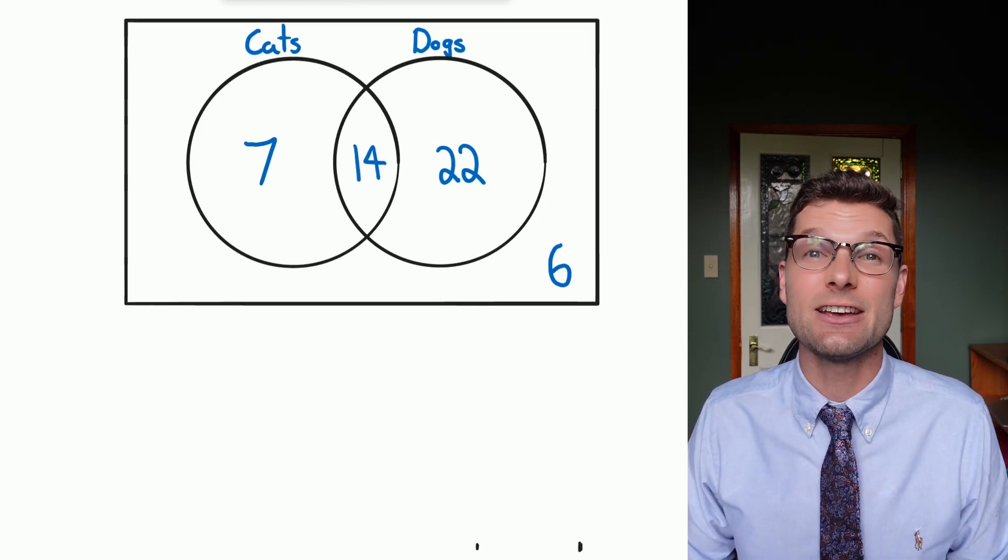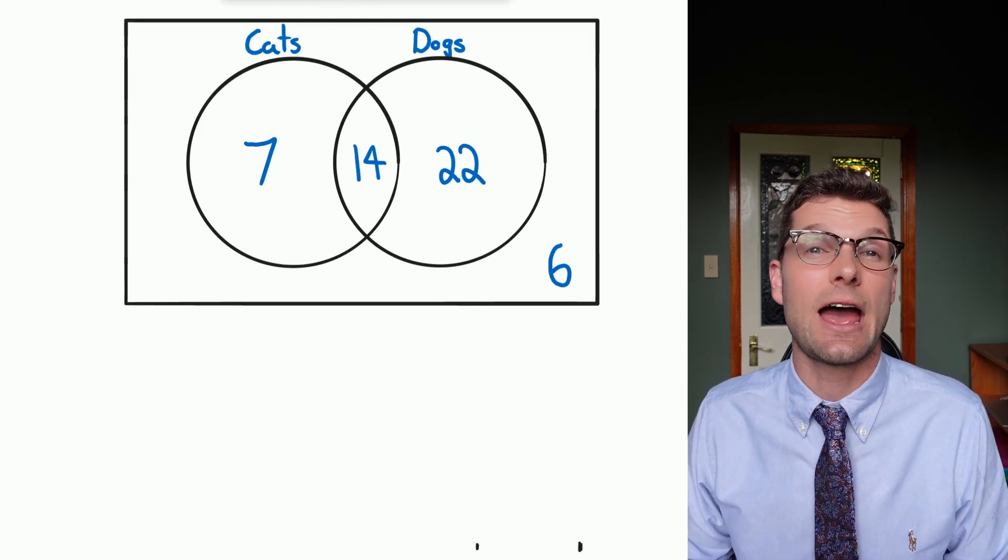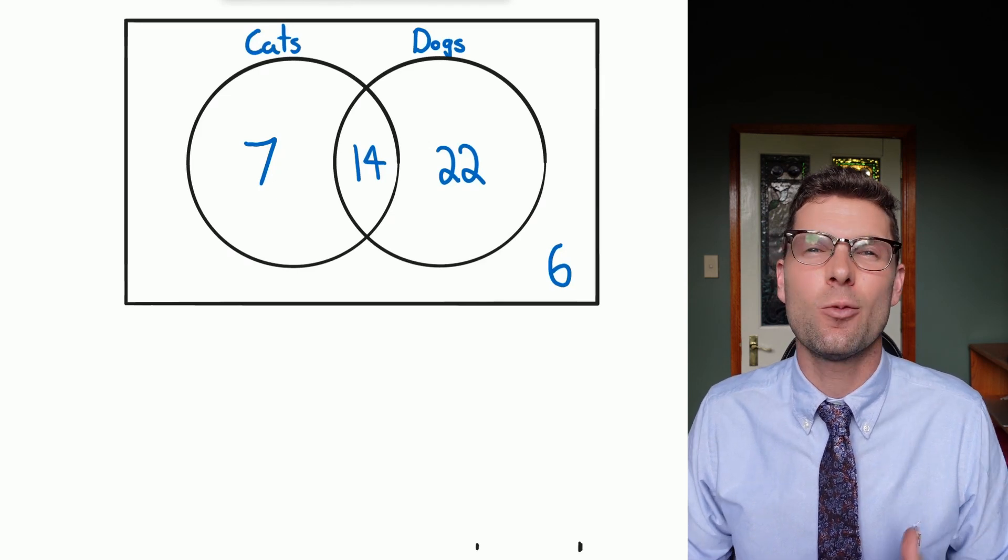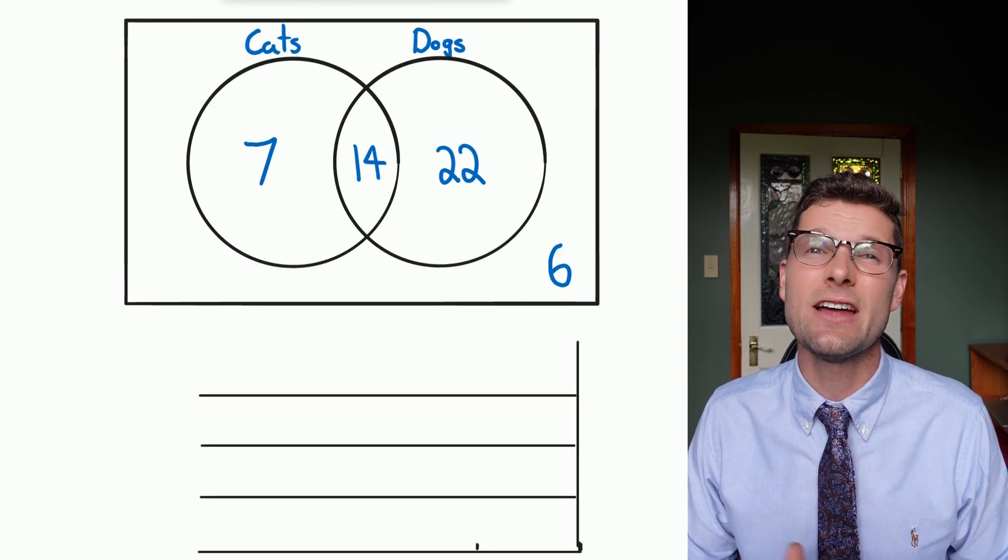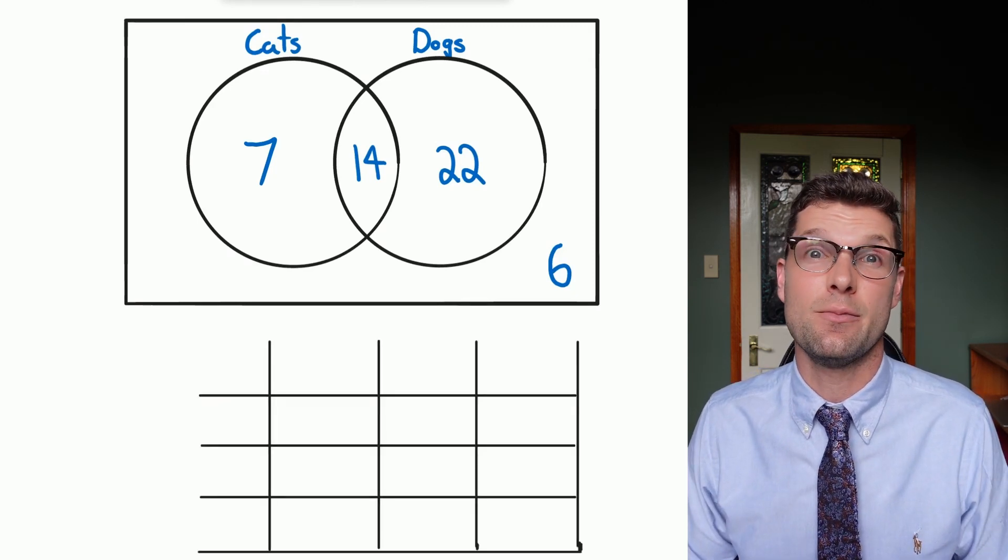So for this you might be asked to create a two-way table straight away. Again we're going to go through my tips. First thing is please just throw up four horizontal lines and four vertical lines immediately.